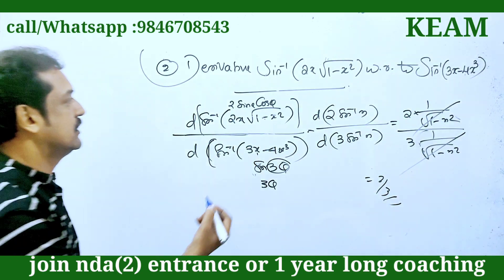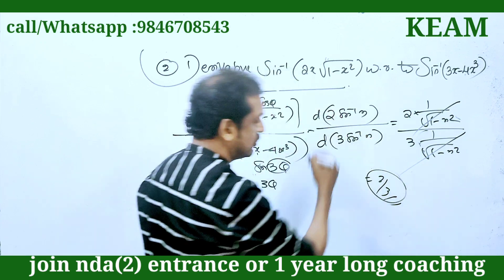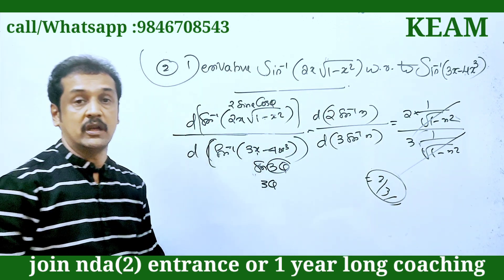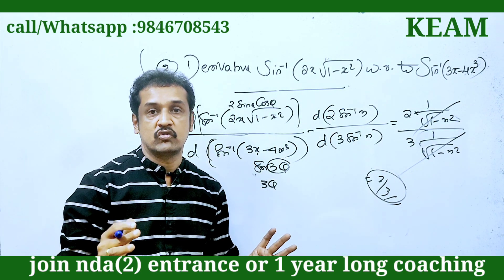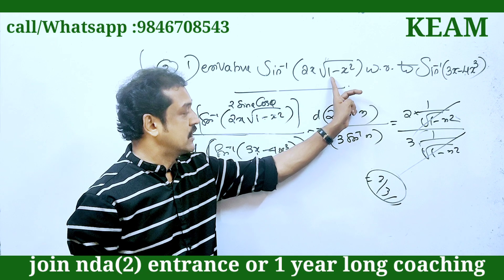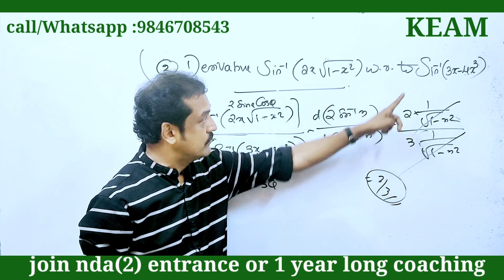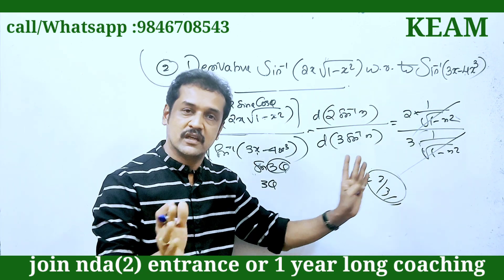The answer is 2/3. This is very important: if sin 2θ appears, the coefficient is 2; if sin 3θ appears, the coefficient is 3.